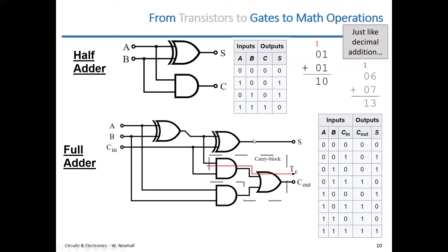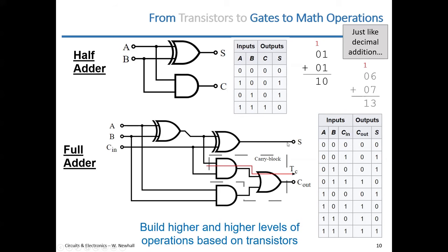I've taken you from transistors to gates and now gates to mathematical operations. You can imagine how you go from transistors to math operations — this is how it's done. You can use transistors and binary numbers, either cut off or saturated transistors, to perform addition of binary numbers really fast. It depends on the reaction speed of those transistors and the propagation speed through the circuit. You can see building higher and higher levels of operation based on transistors for this and other functions.